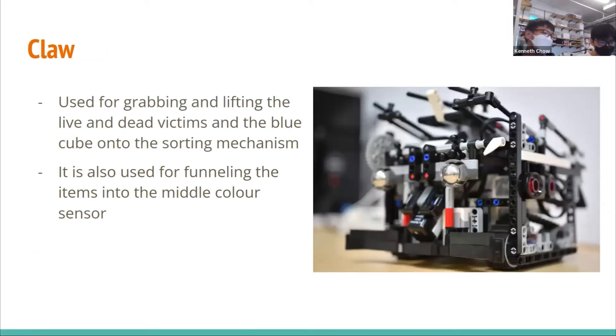Now, I will be talking about the claw. The claw is used for grabbing and lifting the alive and dead victims and the blue cube into the sorting mechanism. We use the grab-and-lift claw as we are doing level 2 blue cube collection. The level 2 blue cube collection deposit is only 6 centimeters, so the claw is to lift the ball or blue cube high enough so that it can be deposited. The claw is also used for funneling the items into the middle color sensor.